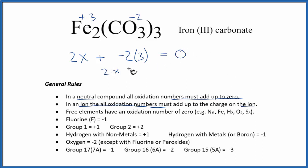So 2x plus negative 6 equals zero. 2x equals 6. Then x equals 3, or plus 3, which is the same thing we got before.